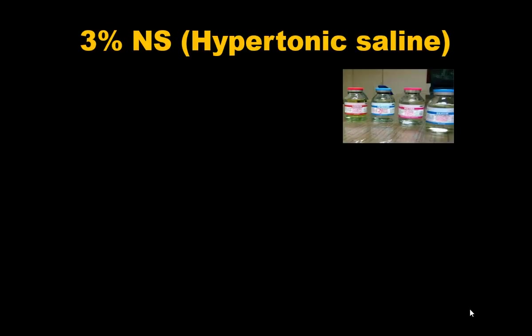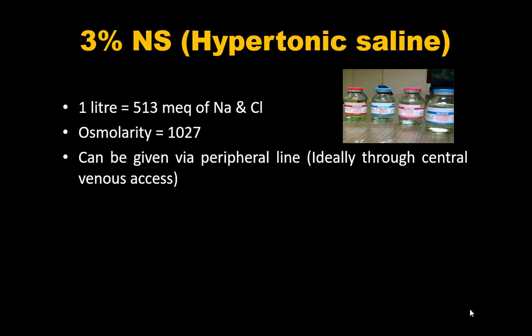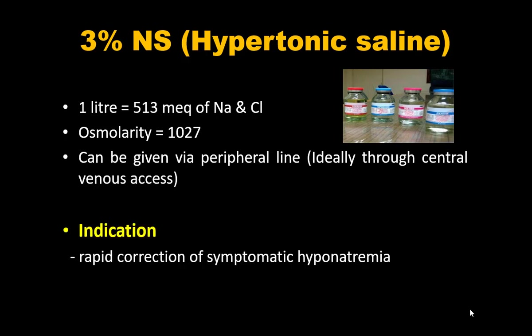3% NS, also known as hypertonic saline, contains 513 mEq/L of sodium and chloride. The osmolarity is 1027, making it hyperosmolar. It can be given peripherally but ideally should be given through a central line, as it can cause thrombophlebitis.